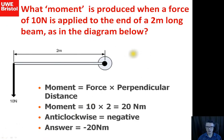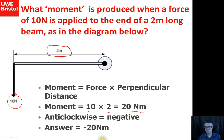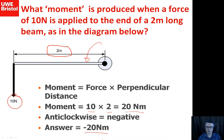Here's an example: what is the moment produced by a 10-newton force applied at the end of a 2-metre arm? The trick tests your understanding of the sign convention. We have 10 N at 2 m, giving 20 newton-metres, but since it creates an anti-clockwise (negative) turning moment, the correct answer is minus 20 newton-metres.